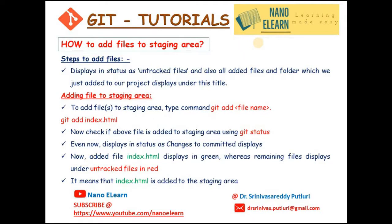To add a file to the staging area, type the command git add followed by the file name. For instance, git add index.html. Now check if the above file is added to the staging area using the command git status. It displays the status as 'changes to be committed.' The added file index.html displays in green color, whereas all remaining files display under untracked files in red color, meaning index.html has been added to the staging area.